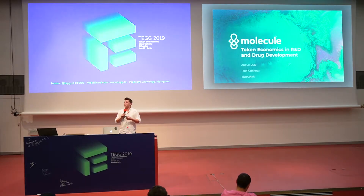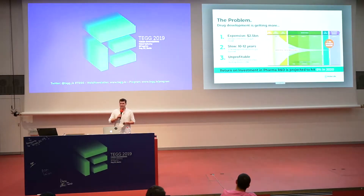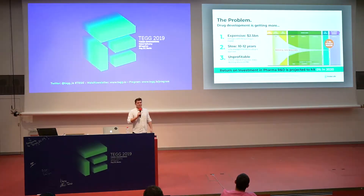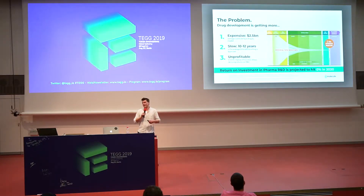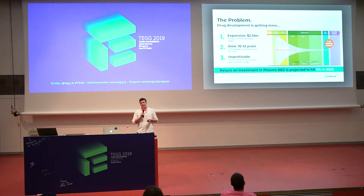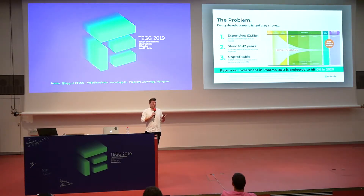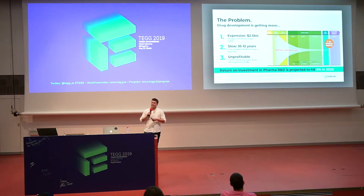Before jumping into the depth of token engineering with Molecule, I want to describe the problem we're really trying to tackle. Over the past 20 to 30 years, drug development has become exponentially more expensive and hard. Currently it costs about two and a half billion dollars to bring a single new drug to market. It's extremely slow — it takes 10 to 12 years for the FDA to approve a new treatment.